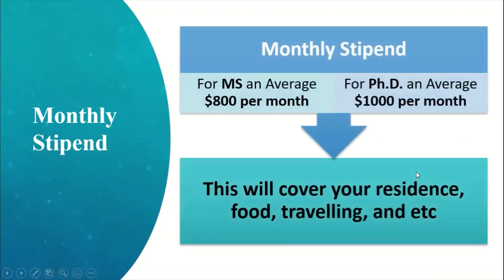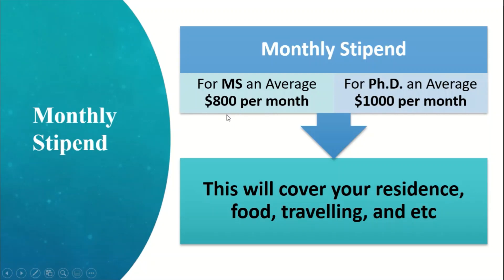The major question about the scholarship is your monthly stipend — how much will you get? Most of the time for Masters the average amount is eight hundred dollars per month, and for PhD it is one thousand dollars per month. You may get less or much more than this — it depends on the available funding for that particular professor. This will cover your room rent, food, and travel. For MS students, scholarships sometimes start from six hundred dollars and may go up to one thousand or twelve hundred dollars, though very few professors provide more than one thousand for MS.